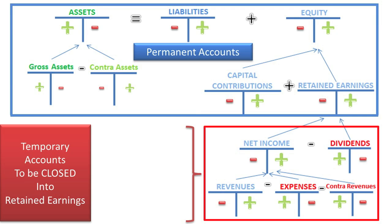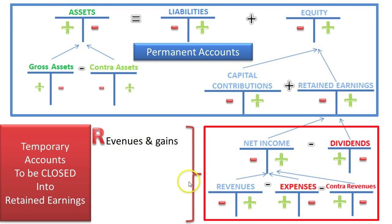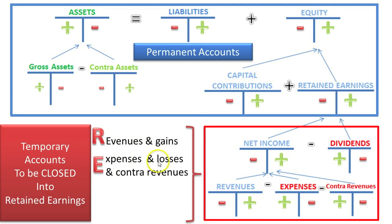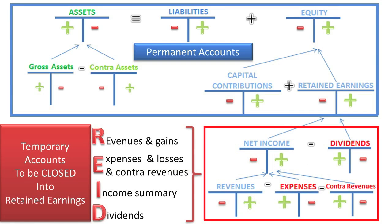One way to remember which accounts are temporary and need to be closed each year is the acronym READ. R stands for Revenues and Gains — gains work just like revenues. E stands for Expenses and Losses and Contra Revenues — losses work just like expenses. A stands for Income Summary — the account we use when recording closing entries. D stands for Dividends. All these accounts flow into and get closed into Retained Earnings.